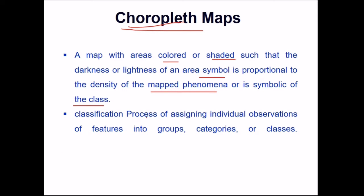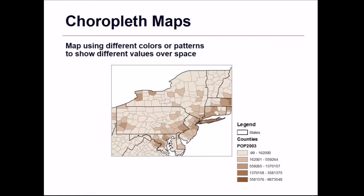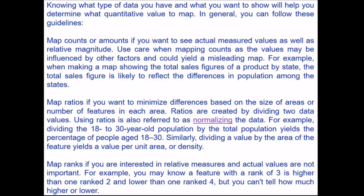A classification process of assigning individual observations of features into groups, categories, or classes also happens in choropleth maps, as we are going to see. This map uses different colors or patterns to show different values over space. Various shades of the same color — mixed with white or black — represent the data values, and this is what is called a choropleth map.